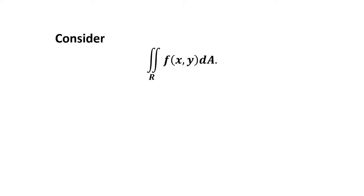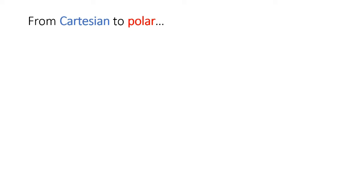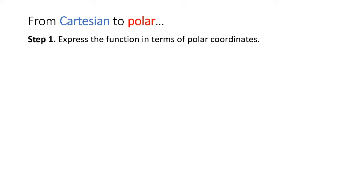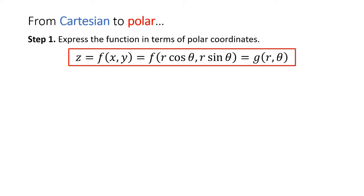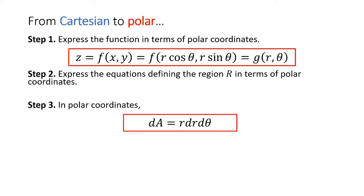Now, let's consider the double integral of f(x, y) dA over the region R. How are we going to convert this double integral in Cartesian coordinates to a double integral in polar coordinates? Step 1: express the function in terms of polar coordinates — that is, x and y in the function should be converted into r and θ. Step 2: express the equations defining the region R in terms of polar coordinates, using the given conversions. And lastly, this is very important — in polar coordinates, dA is equal to r dr dθ.